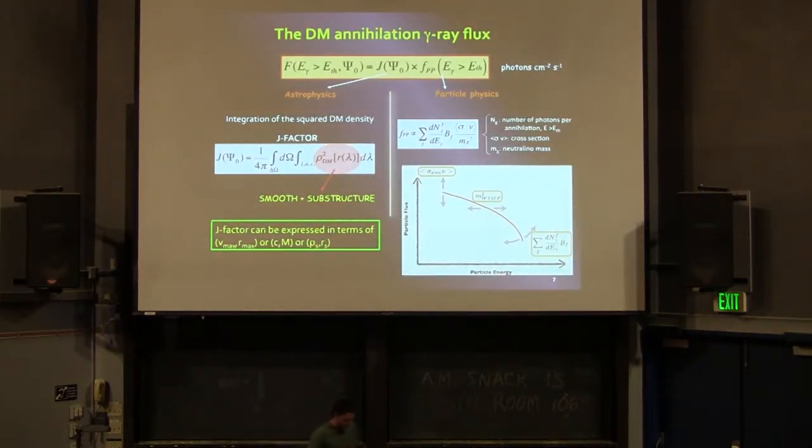Just a reminder for those of you that are not familiar with all this: the dark matter annihilation gamma-ray flux that you expect in your telescope above a particular energy threshold is given by the product of two terms. One that we call the J-factor, which is essentially the integral along the line of sight of the square of the dark matter density.